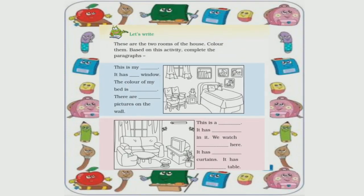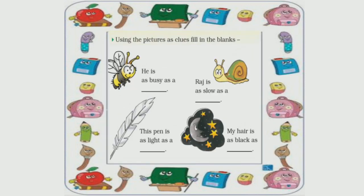Your first exercise: these are two rooms of the house — color them, and based on this activity, complete the paragraphs. What you have to do is: two rooms are given, color them in your favorite colors, and then accordingly complete both paragraphs.